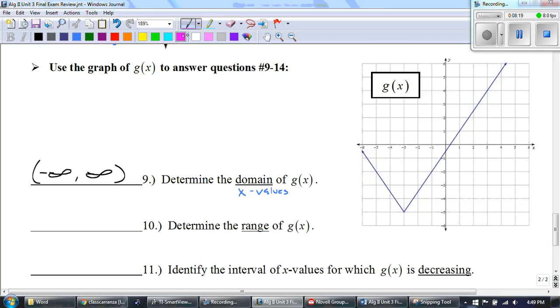Now our range, our range is our y values, and our y values go up and down. Now I can't be down here, our graph doesn't go down here at all, but it does go up starting at negative five. So starting at negative five, our graph goes up to positive infinity.